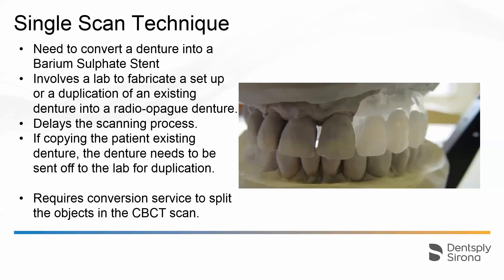Your CBCT image from the patient's existing teeth in comparison to the radiographic prosthesis extent would need a conversion service, unless you have the segmentation editing module within your Simplant software. Not everyone has it, but all Simplant 18 users will have it as it is given by default now. For all users who have not purchased the additional editing module, you definitely need to use the conversion service.